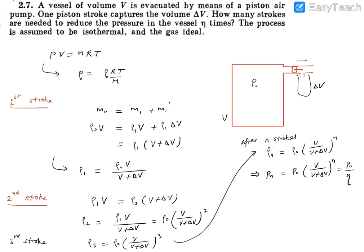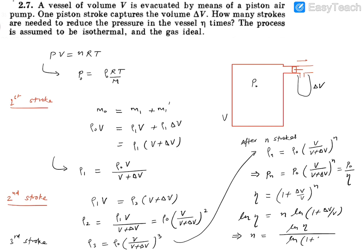Pressure reduces by a factor of eta, so Pn = P0 / eta. Setting these equal and simplifying, eta = [(V + delta V) / V]^n. Taking logarithms, the number of strokes n = ln(eta) / ln(1 + delta V / V). So the number of strokes needed is n = ln(eta) / ln(1 + delta V / V).